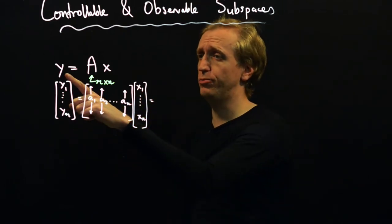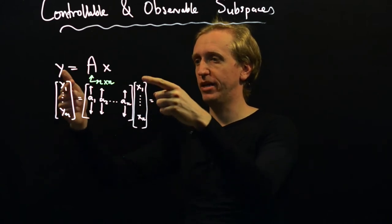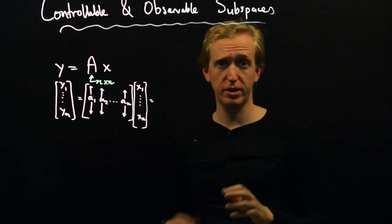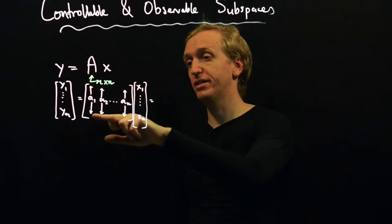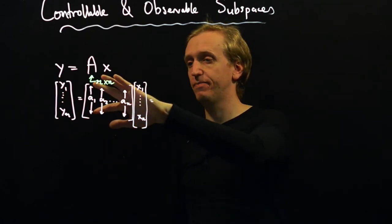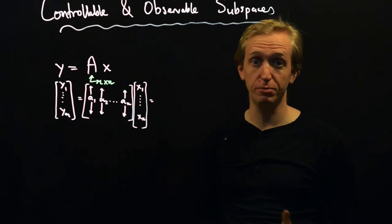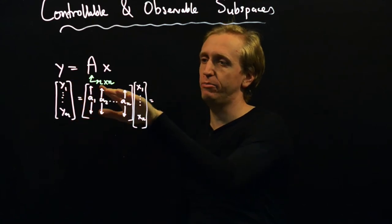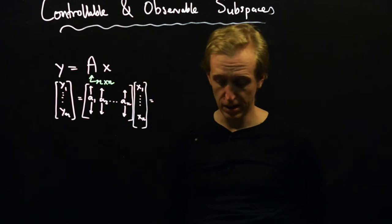Here I've rewritten the equation Y is equal to Ax and lifted out a few details. We've split the vectors Y and X into their components — Y1 through YM and X1 through XN — but most importantly, we've split the matrix A into its columns. There are N columns because it's M by N, and each column is a vector with M entries, labeled A1, A2, and so on up to AN. When you were first taught matrix multiplication, you were probably told Y1, the first output, is given by the dot product of the first row with the vector X, the second by the dot product of the second row, and so on.